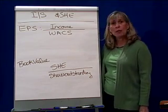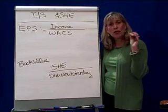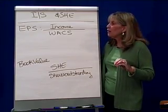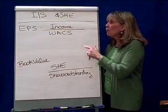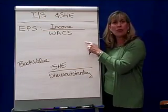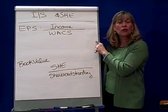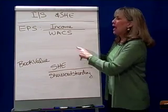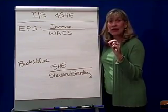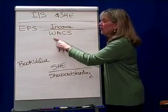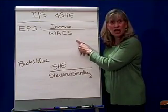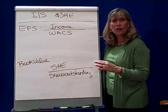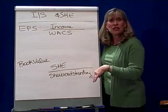In earnings per share, we take the net income or the major key subtotals in the income statement, and we divide that by the weighted average common shares outstanding — I like to call it WACS. Now, in this chapter and in this course, figuring out exactly what weighted average common shares is, is a little bit of a complicated process, so generally this is given to you.